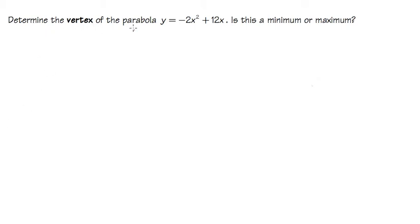We are going to determine the vertex of the parabola y equals negative 2x squared plus 12x, and we also have to know if the vertex is going to be minimum or maximum. So as we can see, this equation is in the standard form, because we have the ax squared plus bx plus c form.